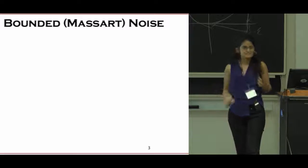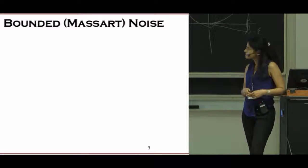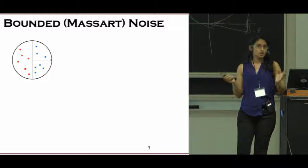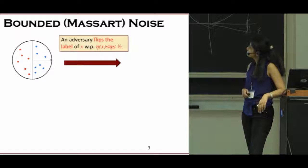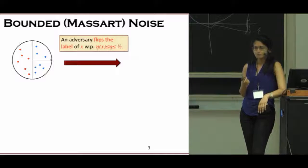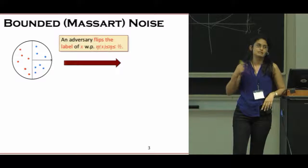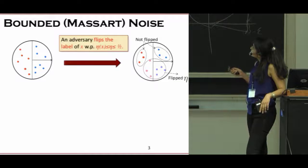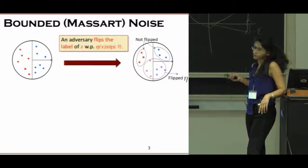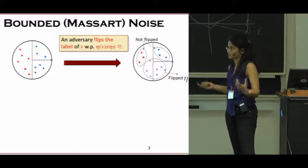One of the natural asymmetric noise models is the bounded noise model, also called Massart noise model. In this case, you start with a non-noisy setting—this is realizable—and then some adversary comes in and for each point X will flip the label of X, but with the restriction that the probability of flipping this point is at most a fixed eta. This is asymmetric because you can have regions that are not flipped at all and regions that are maybe flipped as much as you can. This is a very asymmetric but still simple to describe noise model.